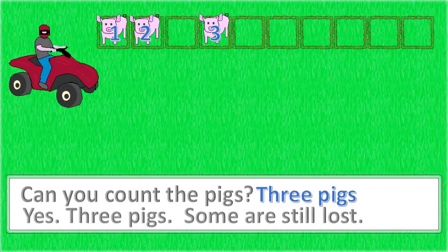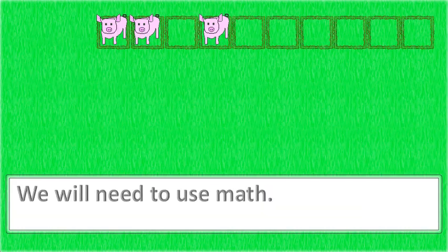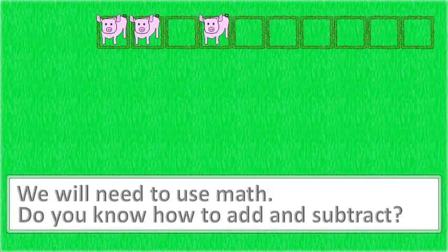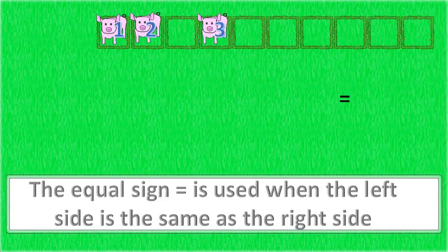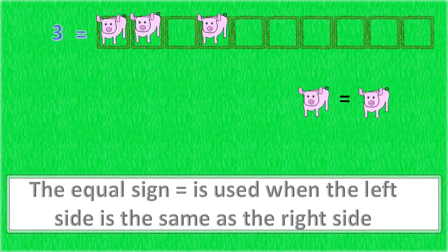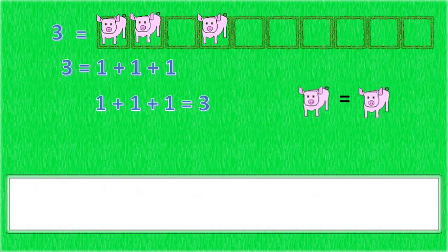Some are still lost. Do you know how to add and subtract? The equal sign is used when the left side is the same as the right side. 3 equals 1 plus 1 plus 1. 1 plus 1 plus 1 equals 3.